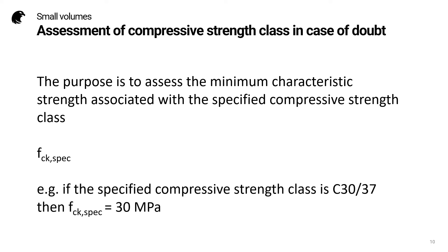Now let's look at the second application: assessment of compressive strength class in case of doubt. The purpose is to assess the minimum characteristic strength associated with the specified compressive strength class. So if we have a strength class of C30/37 specified, then fck,spec is 30 MPa.